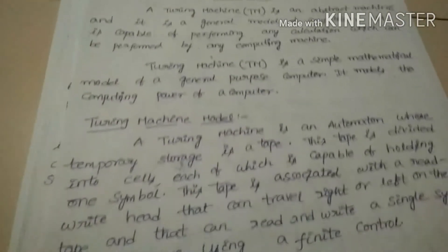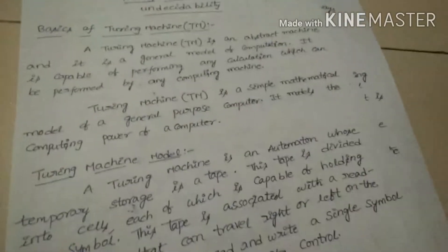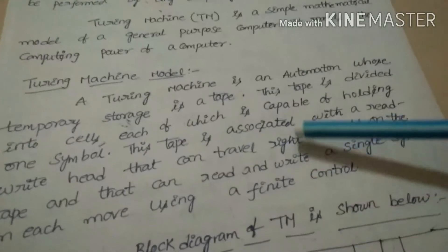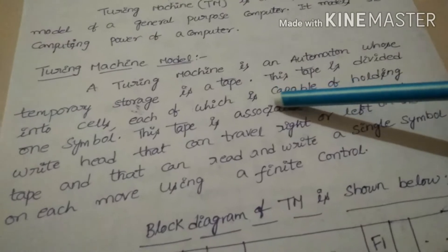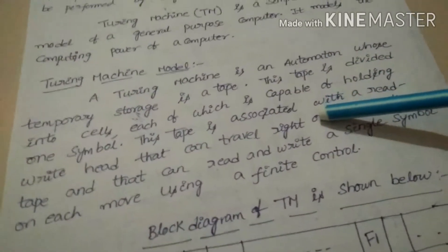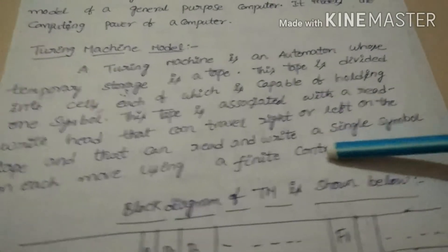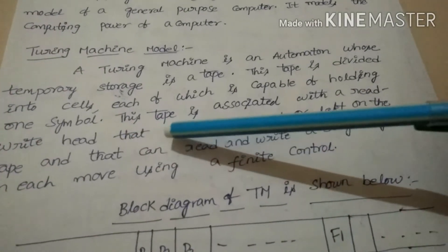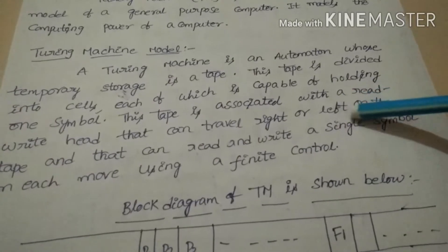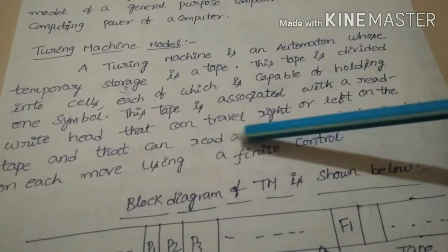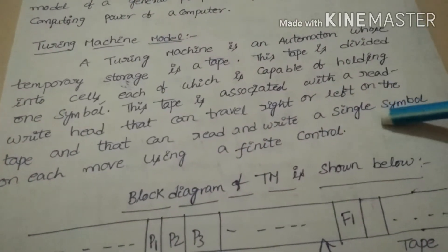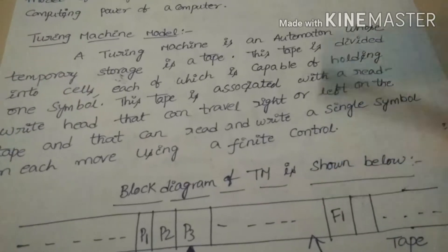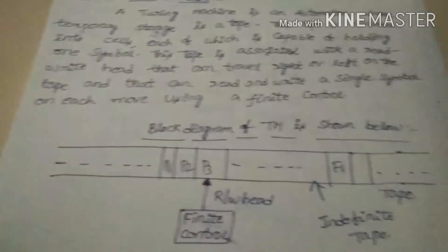These are the basics of the Turing machine. Next is the Turing machine model. A Turing machine is an automaton whose temporary storage is a tape. This tape is divided into cells, each of which is capable of holding one symbol. This tape is associated with a read-write head that can travel right or left on the tape. It can read and write a single symbol on each move using a finite control. This is the block diagram of the Turing machine.